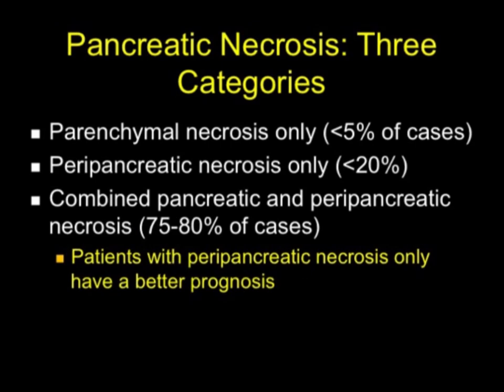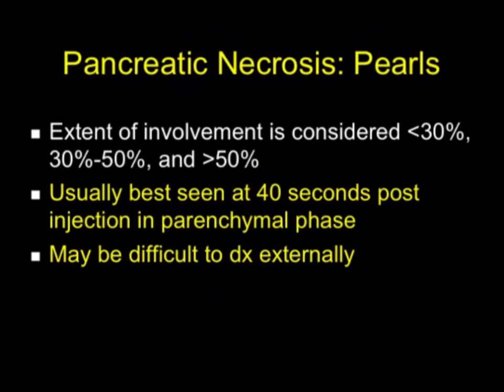When you look at pancreatic necrosis, we now break things into three categories: parenchymal changes only — parenchymal necrosis is less than 5% of cases; peripancreatic necrosis only — less than 20%; and most commonly, combined pancreatic and peripancreatic necrosis. Patients with peripancreatic necrosis only have a better prognosis because the gland itself is less involved. In terms of pearls, we divide necrosis extent into under 30%, 30 to 50%, and over 50%, and it's usually best seen at 40 seconds post-injection in the parenchymal phase.